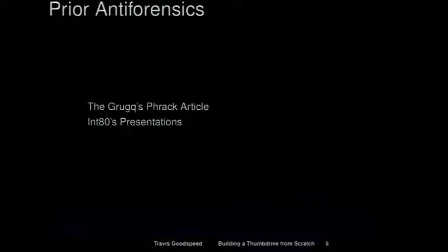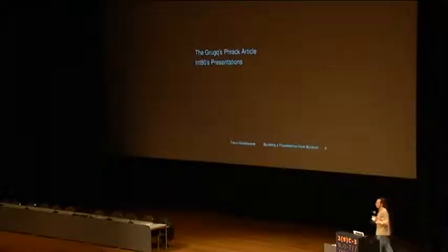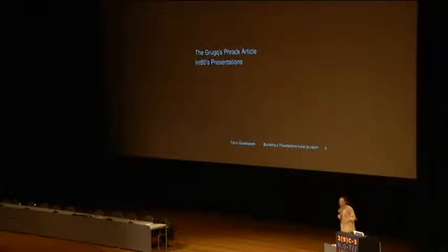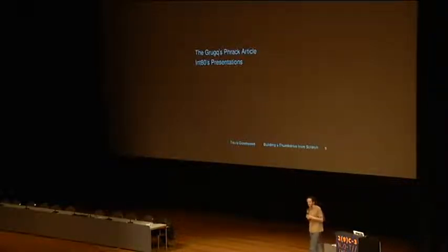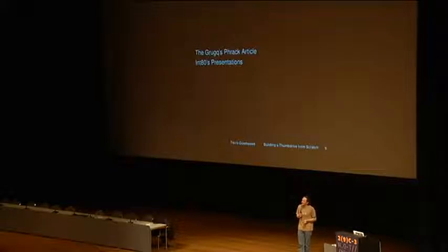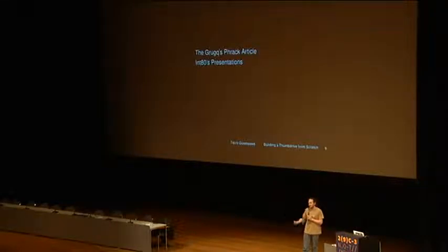There's also an anti-forensics paper by the Grug, and some presentations by Entity from Dual Core. They take different views of this. The Grug assumes you have remote access to a server and have placed files on the disk that you need for your evil mission. What can you do to make file system forensics tools not notice this? He does things like marking a region as damaged so the forensics tool will skip over it, just like the real file system would.